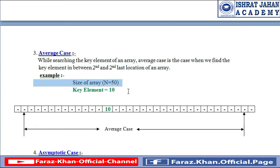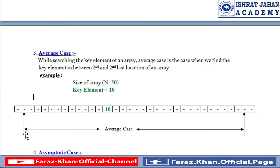For example, we have the same array of size n equal to 50 and the key element we are going to find is 10, just like the previous two examples. If we find that element — see the mouse closely — at index number two through the second-last index of the array, we call it average case. If we find an element in between the second and second-last index of the array, we will call it average case.